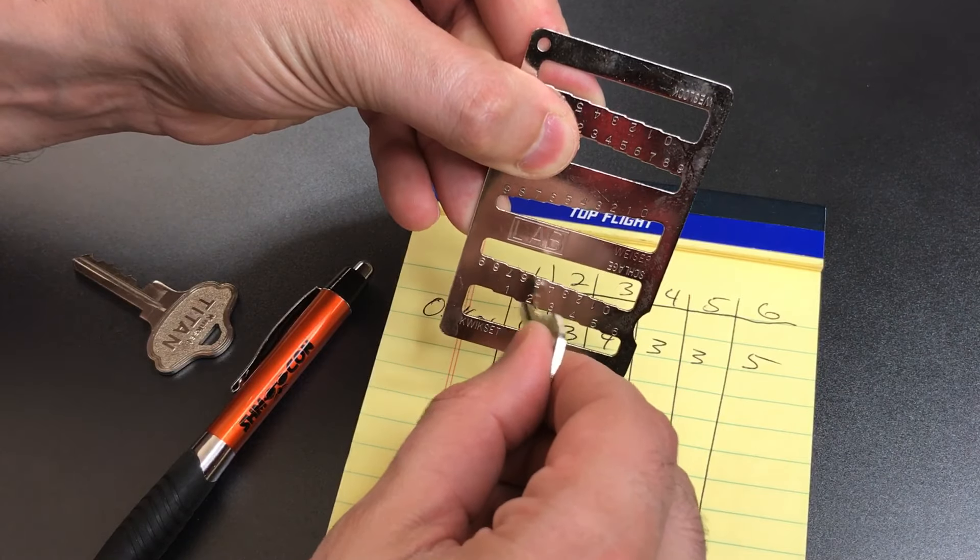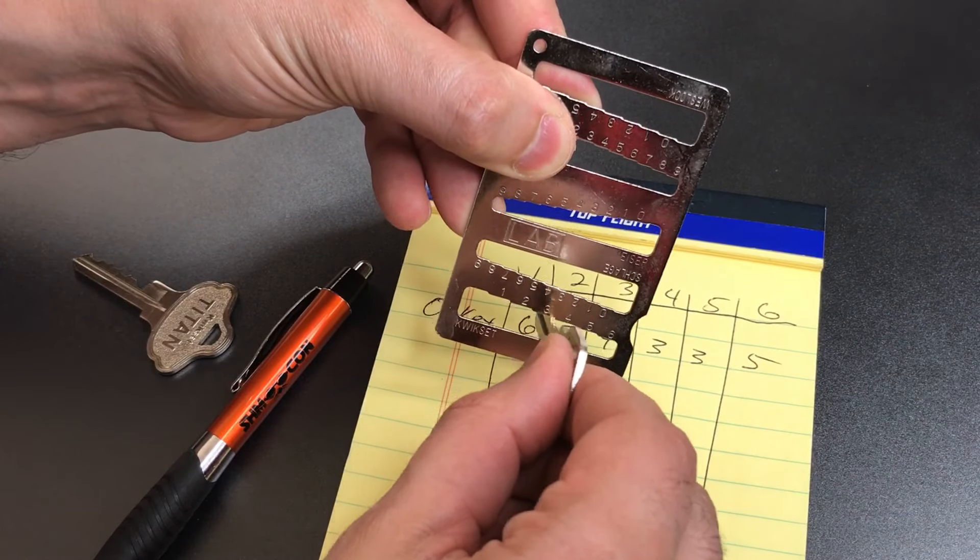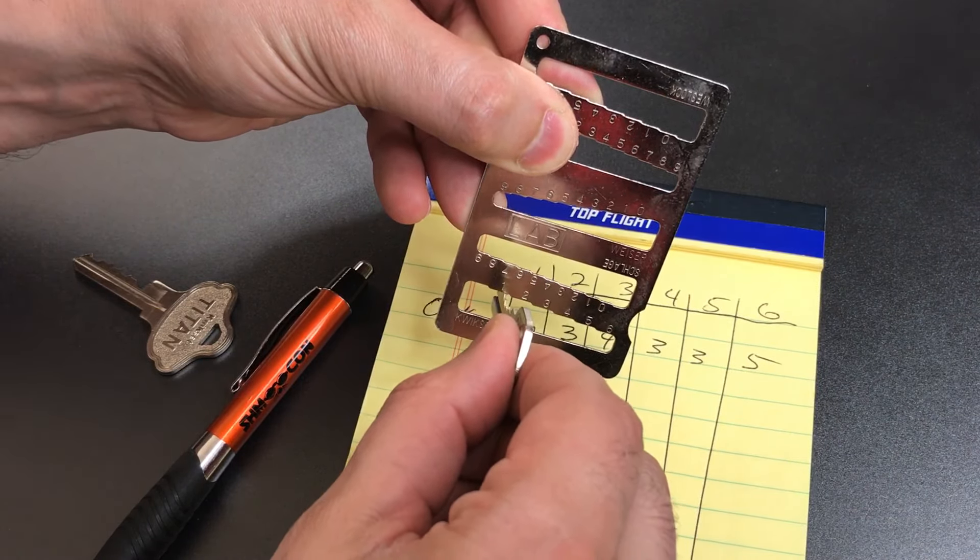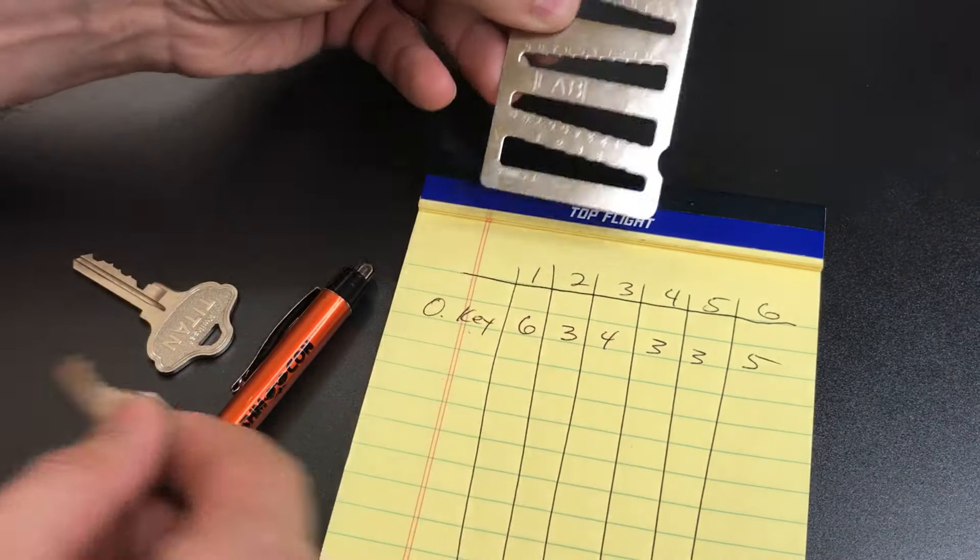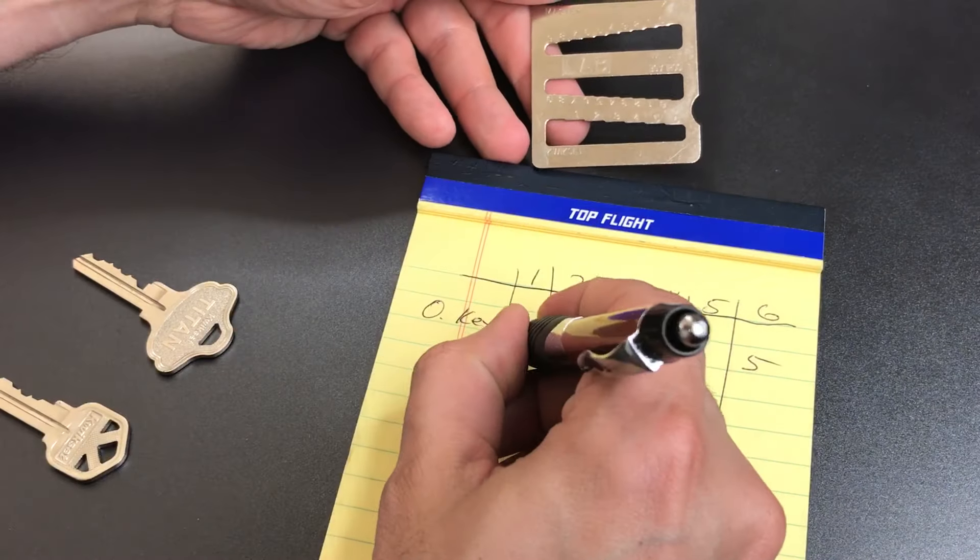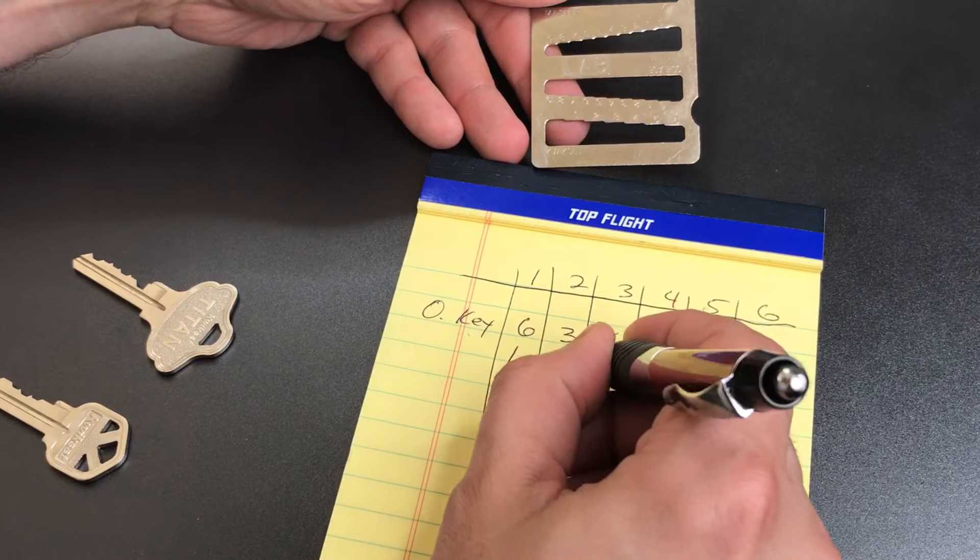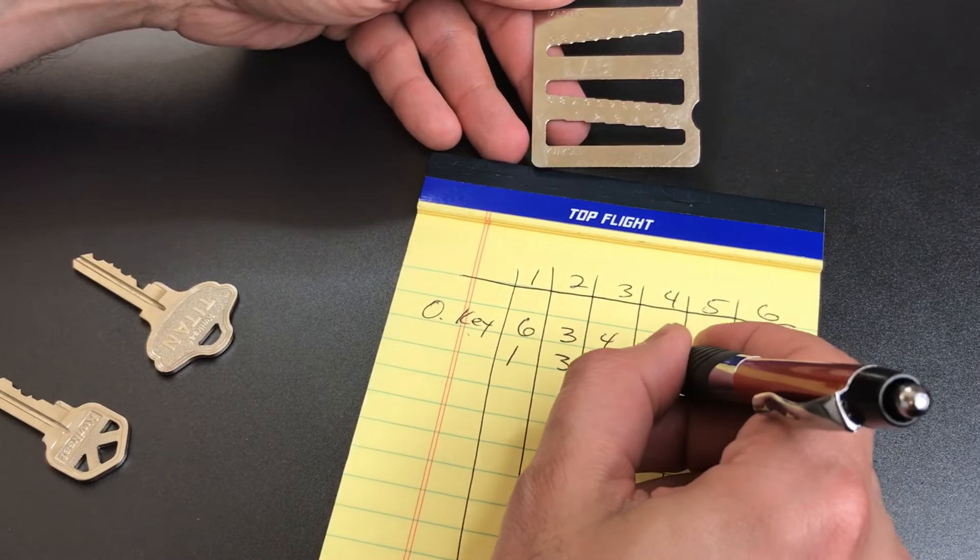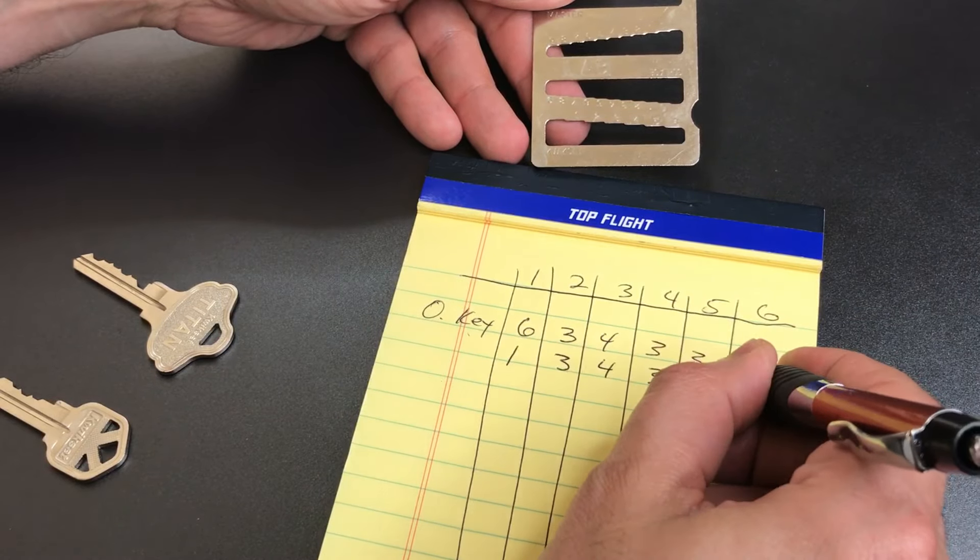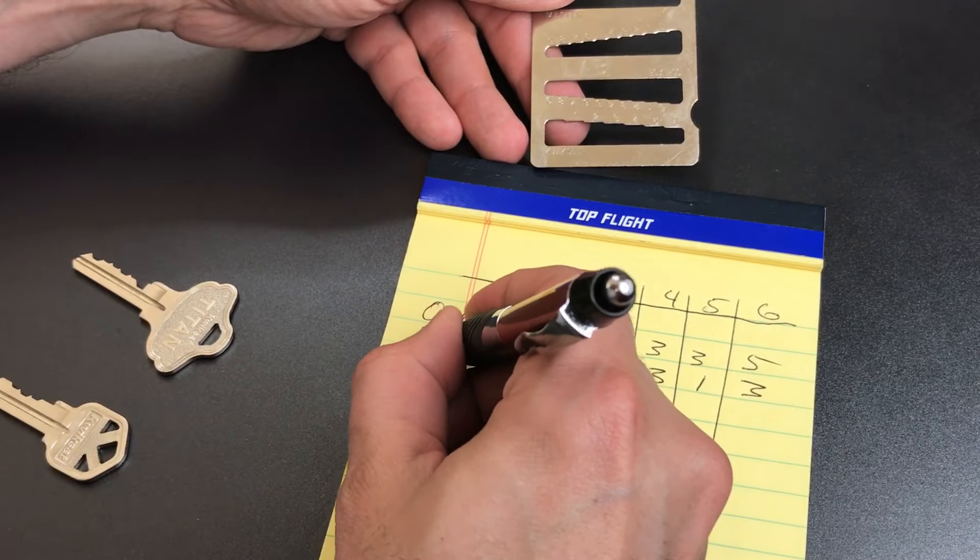Now let's take a look at the new key. One, three, four, three, one, three. Okay, so one, three, four, three, one, three. And that is our new key.